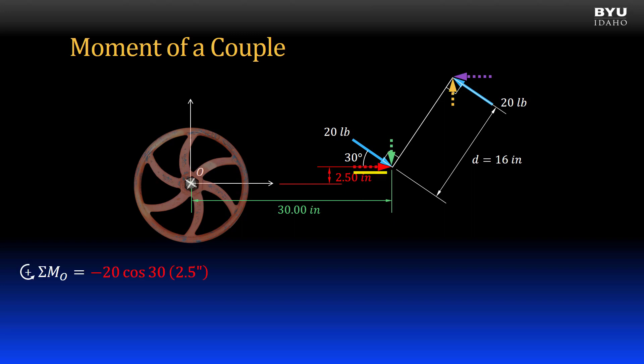I first get the moment contributed by the horizontal component of the force on the left times its vertical offset from point O. Note its negative direction by the right-hand rule. Then the vertical component of the force on the left times its horizontal offset from point O, also negative by the right-hand rule.